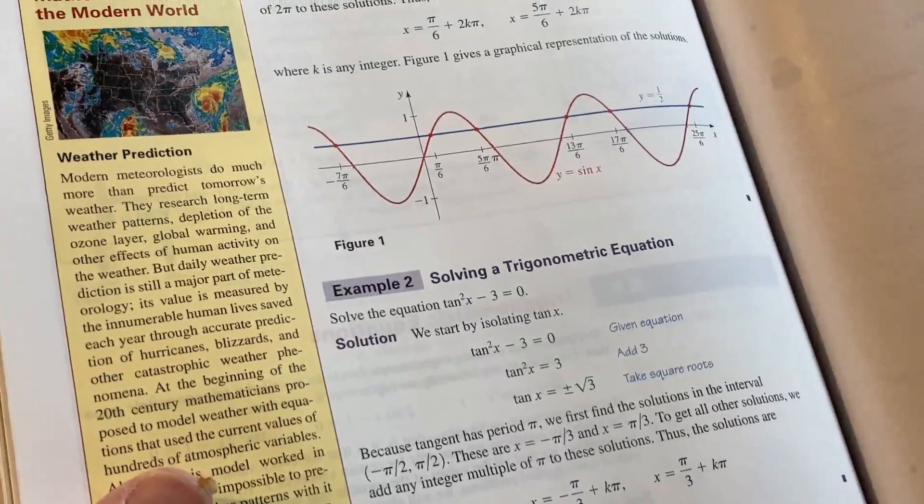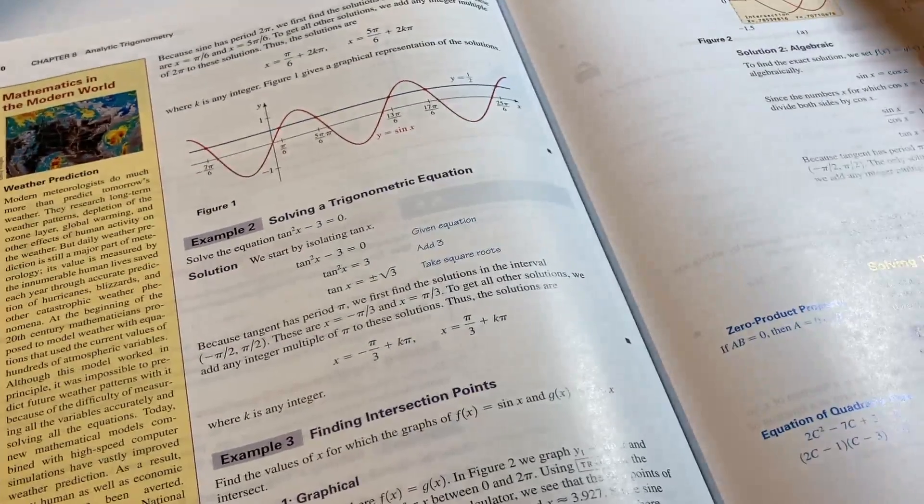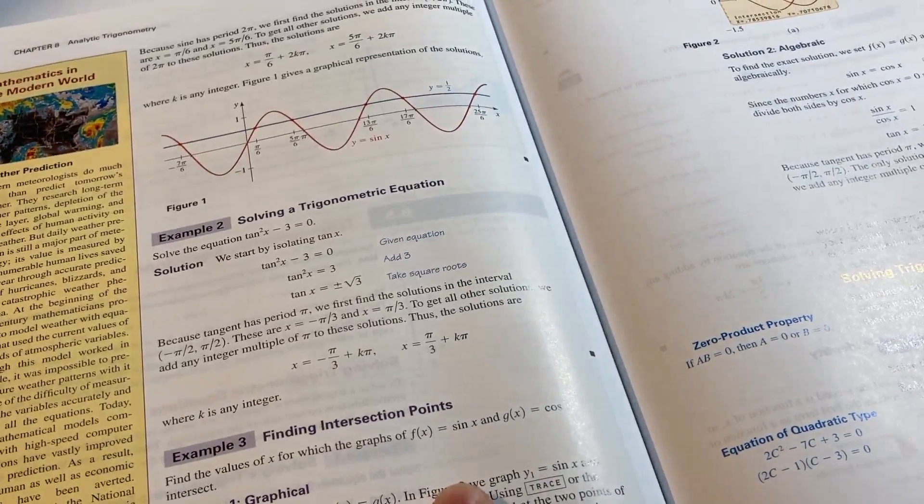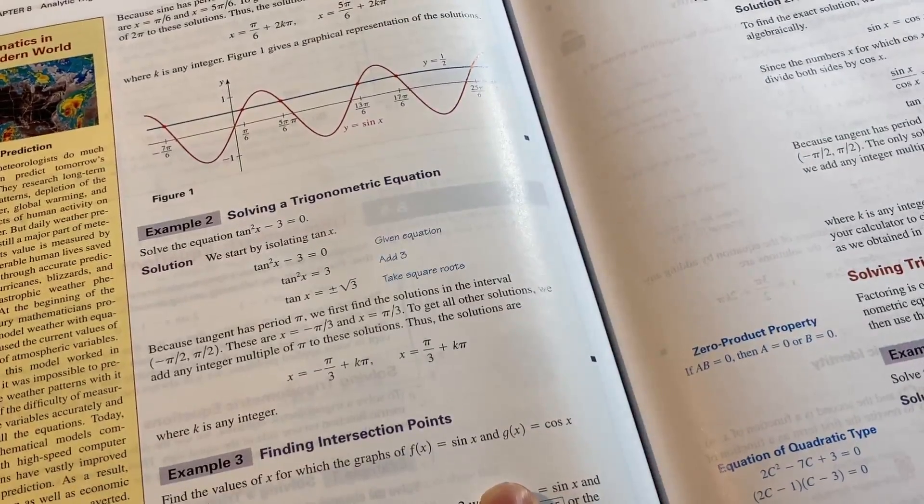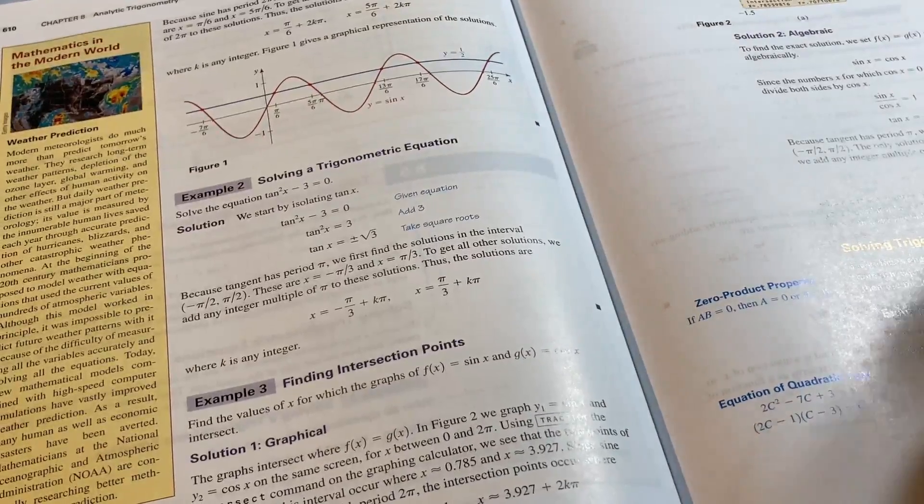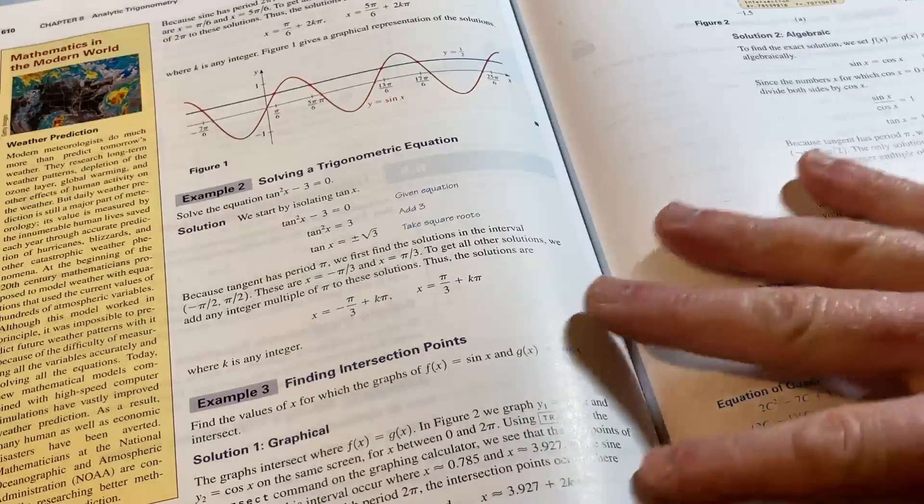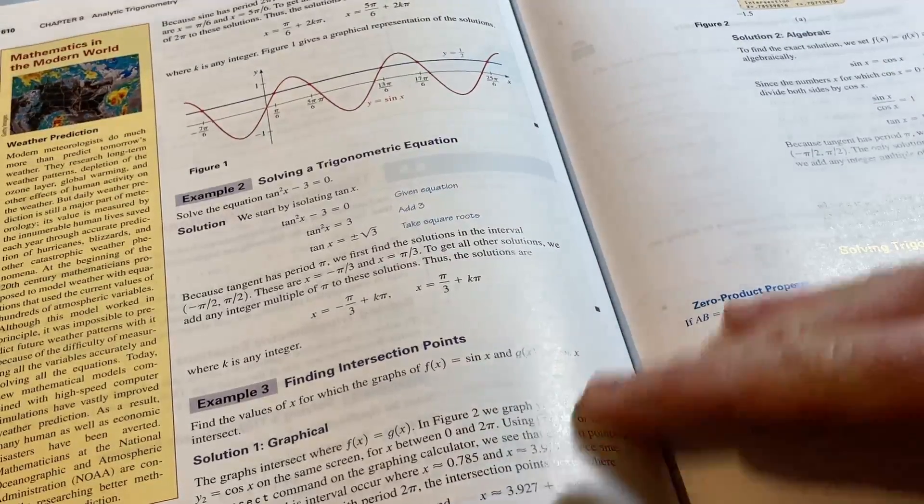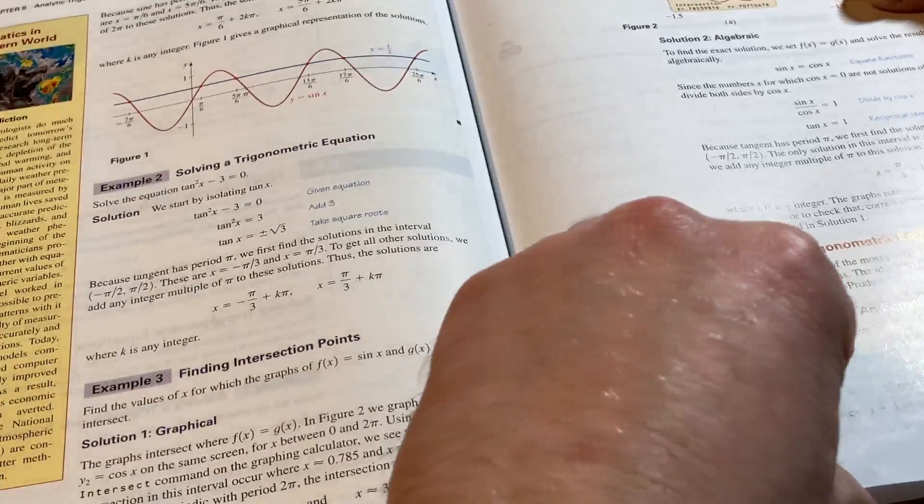Then here's one with tangent squared. Then something about finding intersection points. They set sine equal to cosine. That's interesting. I remember having to do that in an unrelated problem. It was a complex variables class, way more advanced than trig, and I didn't know how to do it. So really good that this example is in the book. Brings back some memories of being stuck.